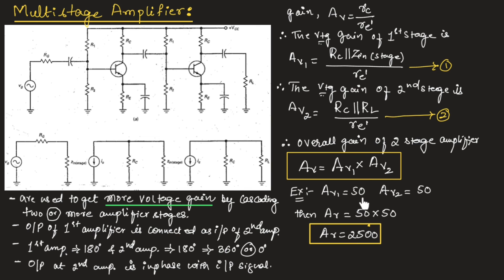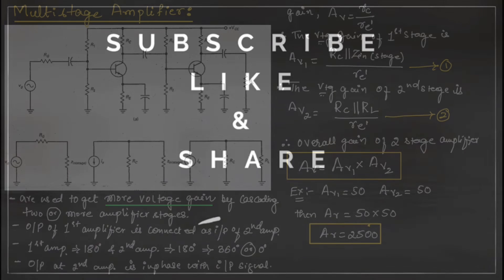As you can see, if we use a single amplifier we get a gain of 50 times, but if we use two amplifiers each with a gain of 50, the overall gain increases to 2500 times. This is the advantage of using multi-stage amplifiers — we can achieve very high gain by cascading two or more amplifiers. I hope you have understood the topic. Thank you.